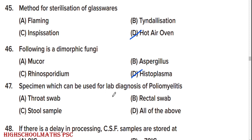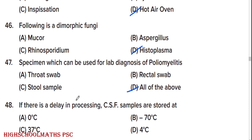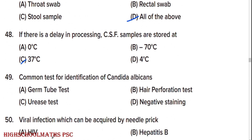Which of the following is a dimorphic fungus? Option D: Histoplasma. Specimen which can be used for lab diagnosis of poliomyelitis is option D: all of the above — throat swab, rectal swab, and stool sample.